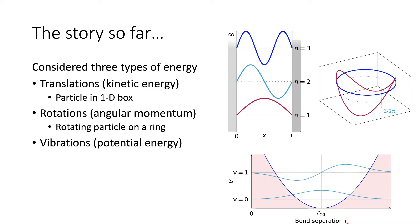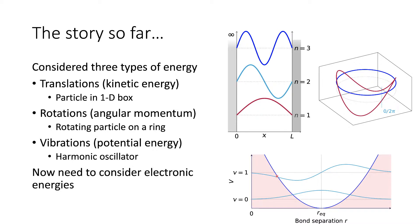We then looked at vibrational energies, where we combined kinetic energy and potential energy into the harmonic oscillator model. In the harmonic oscillator model, we saw the effect of having a finite potential — we get tunneling happening, where there's a probability of finding the particle outside the limits predicted by theory. Now, in order to complete the picture, we need to consider electronic energies, and to do this we're going to look at the particle in a three-dimensional box.